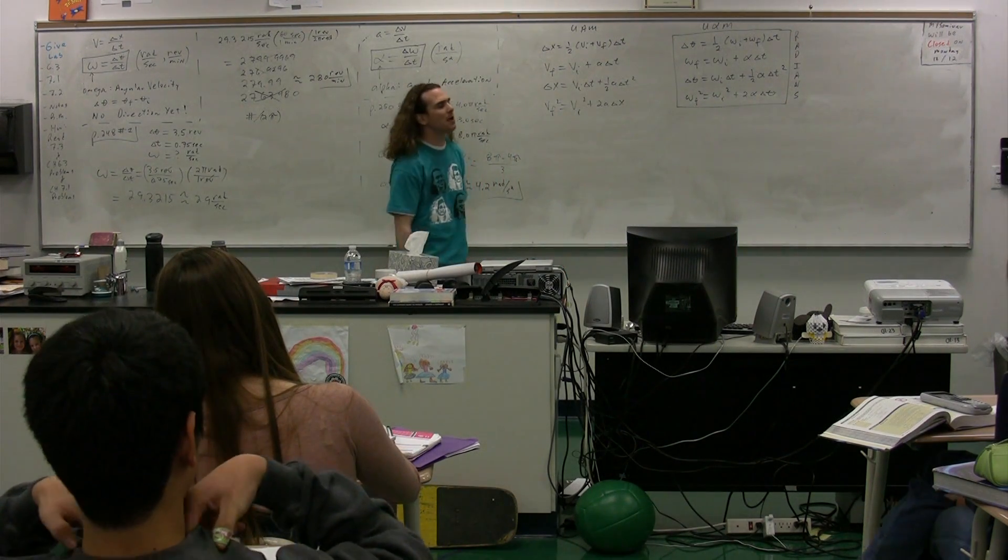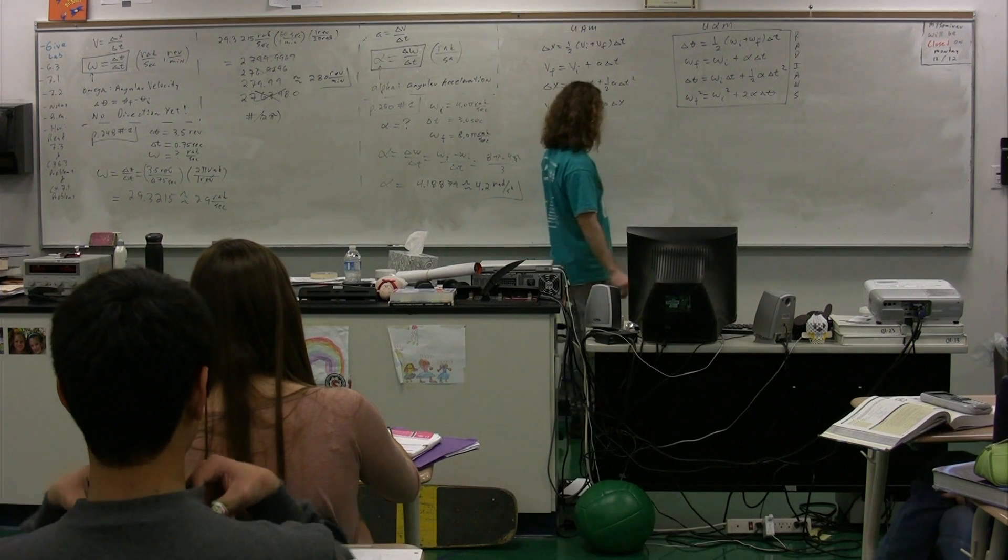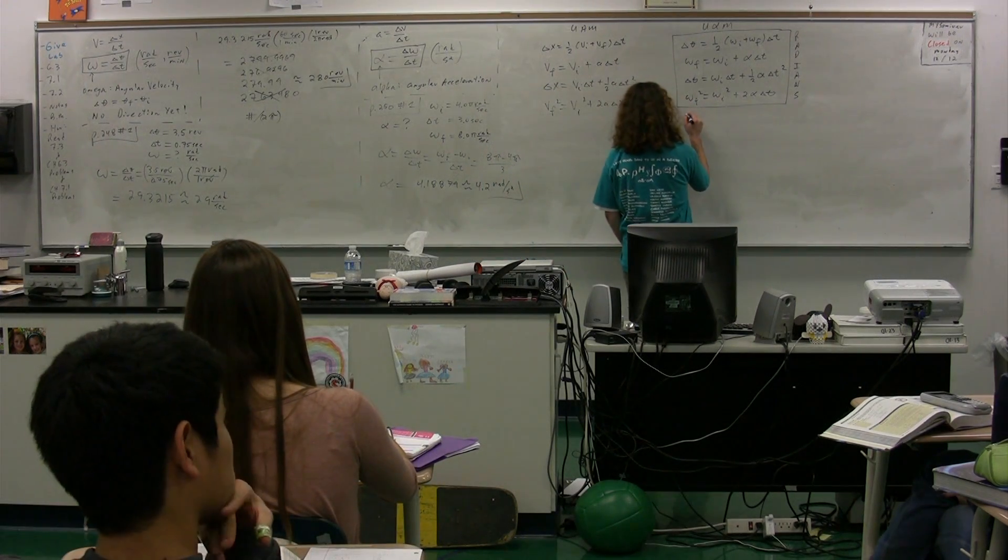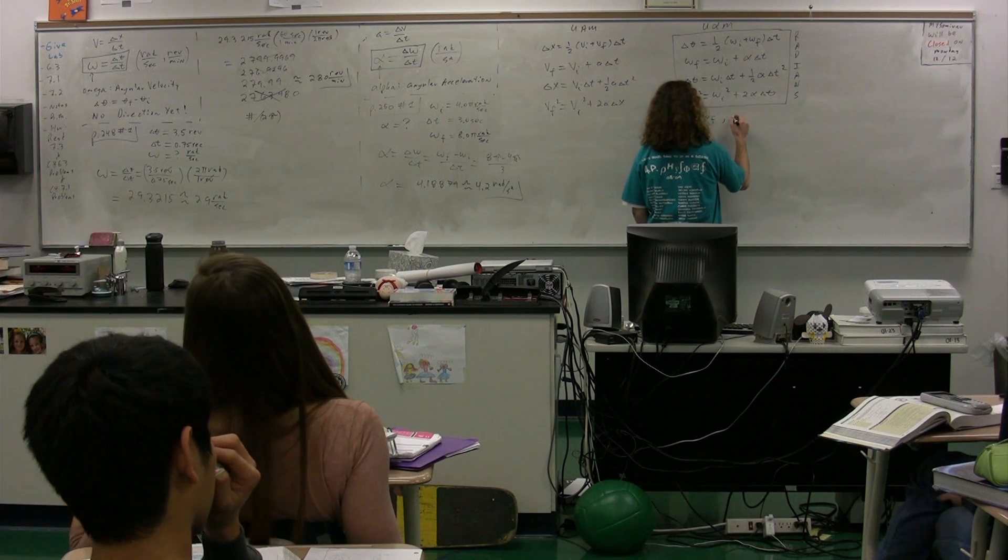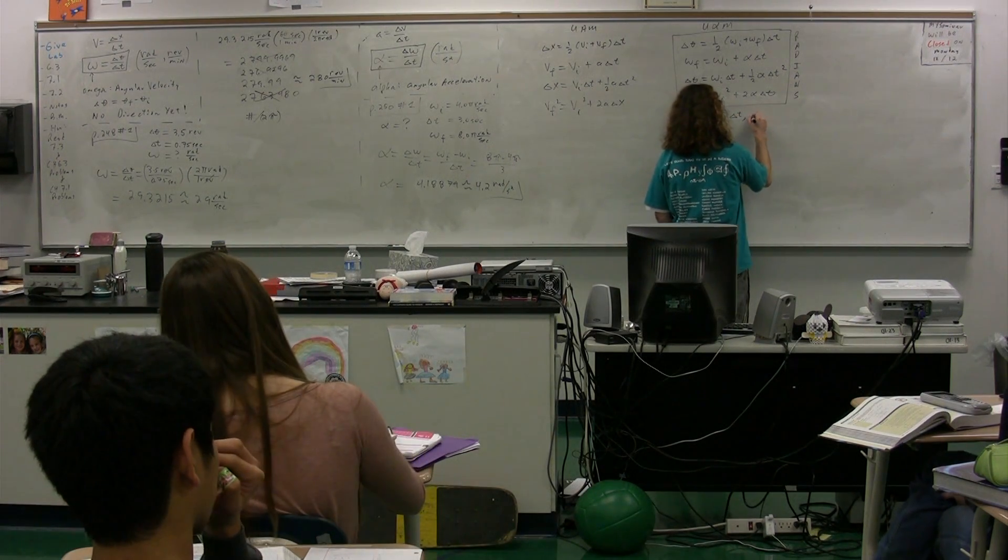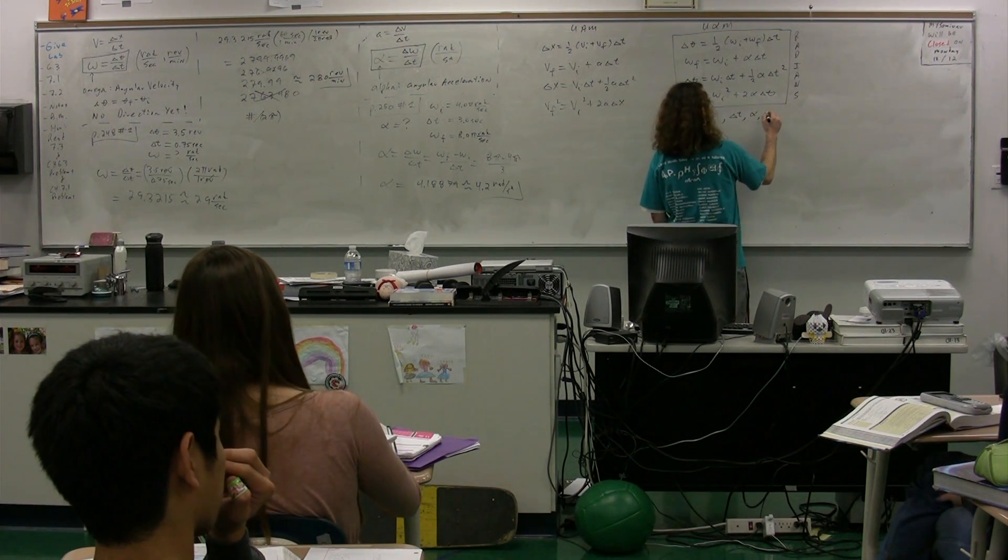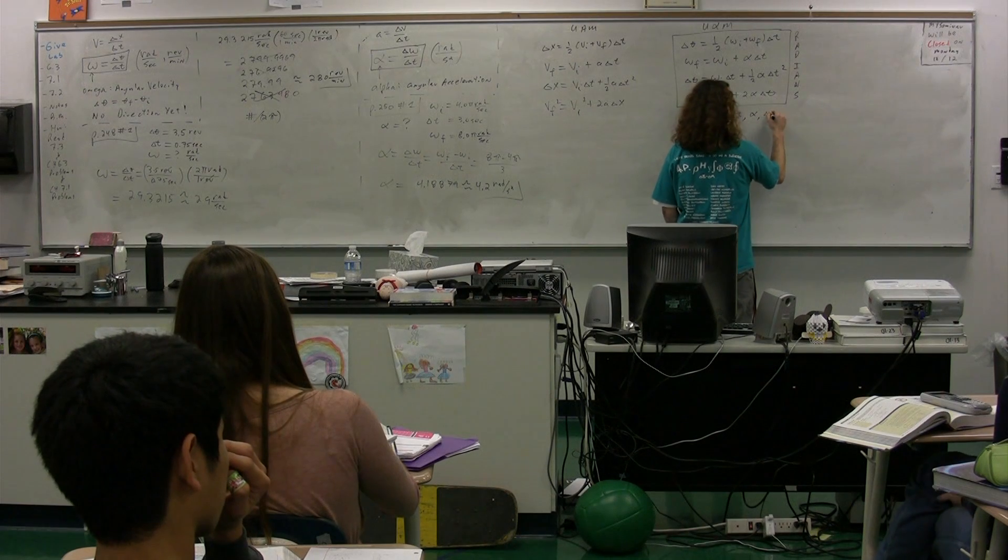Please give me all five U-Fishy-M variables. Tolia. Omega initial, omega final, change in time, fishy, and change in theta. Change in theta. Just to make sure we understand.